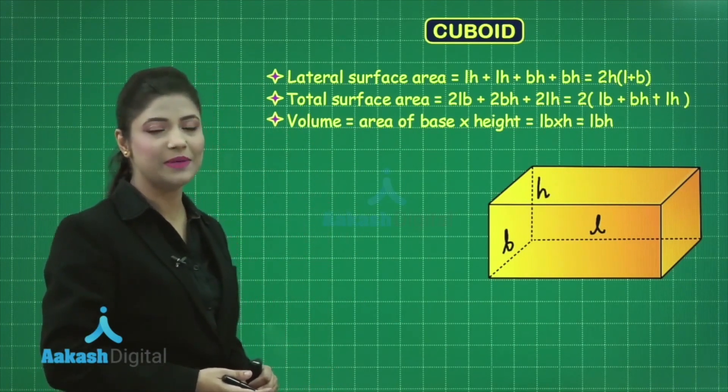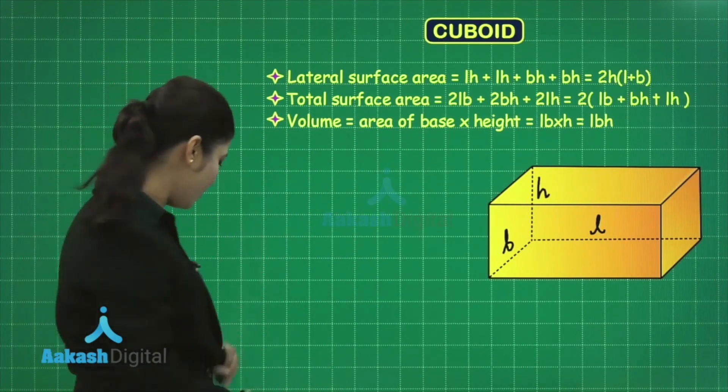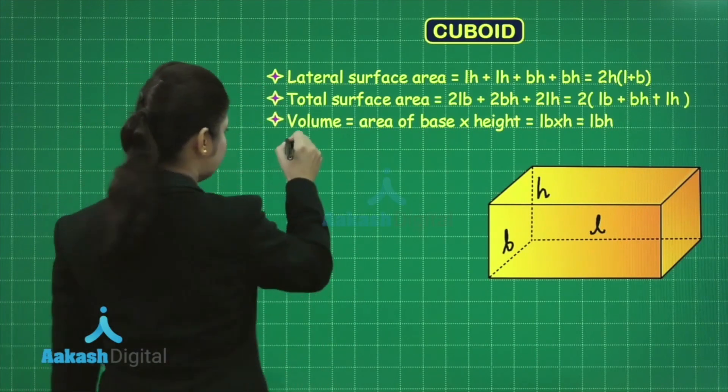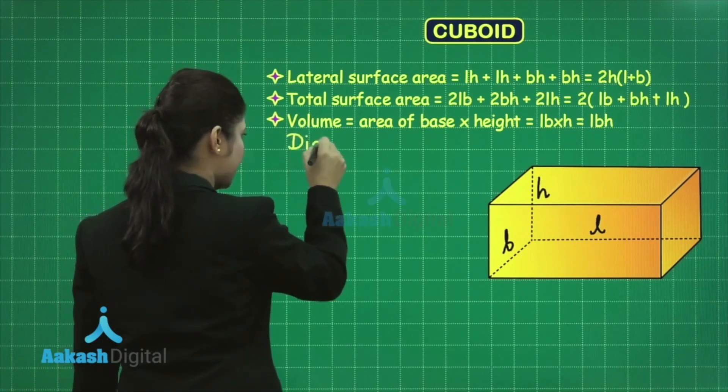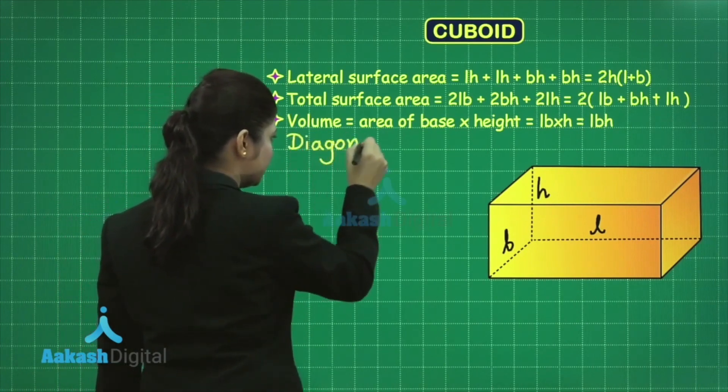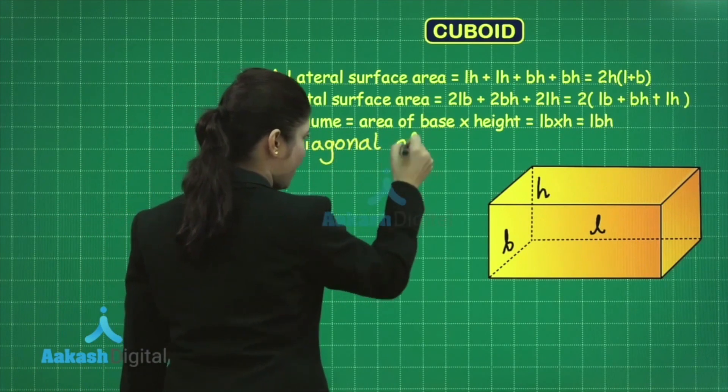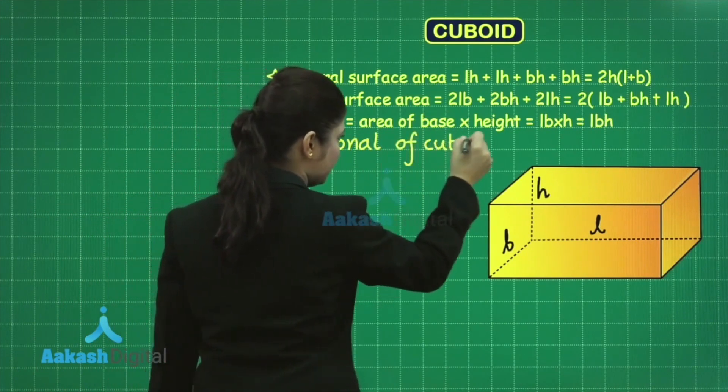You have learned one more important formula: the diagonal of the cuboid. The diagonal is given as √(L²+B²+H²).